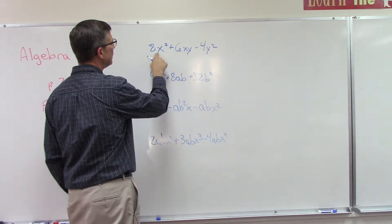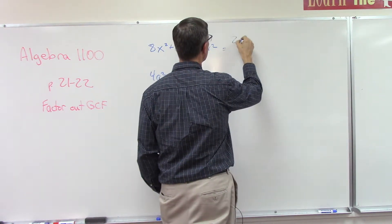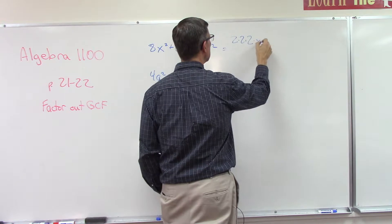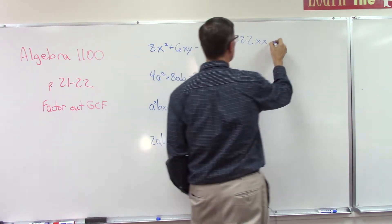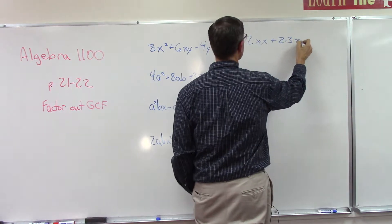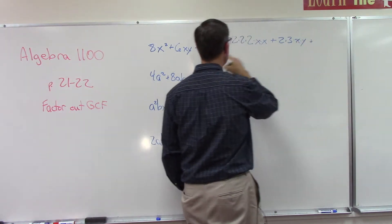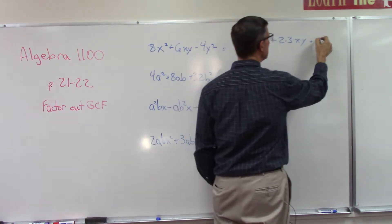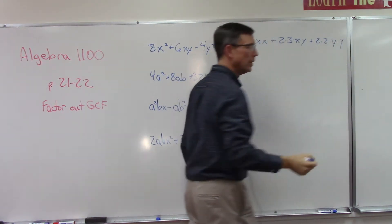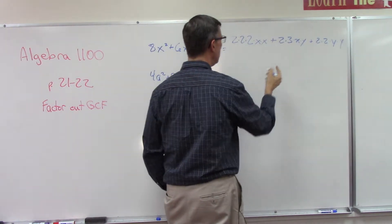I want you to see something here. 8 we could write as 2 times 2 times 2 times x times x. Plus 6 is 2 times 3 times x times y. And then this last term, 4y squared, is 2 times 2 times y times y.